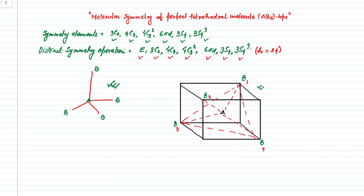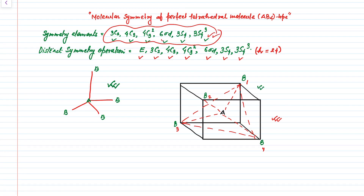From this example, it is clear that we represent the tetrahedral molecule in a cube by putting the B atoms on alternate corners of a perfect cube with the central atom at the center of the cube. With the help of this cube, we will try to understand the presence of each symmetry element in the perfect tetrahedral molecule of AB4 type. But in a single video, it is very difficult to show the presence of all the symmetry elements, because this molecule has a principal axis of rotation, proper axes of rotation, and a special type of plane which is your sigma D. In the next series of videos, I will try to explain the presence of each symmetry element and its symmetry operation with proper examples.